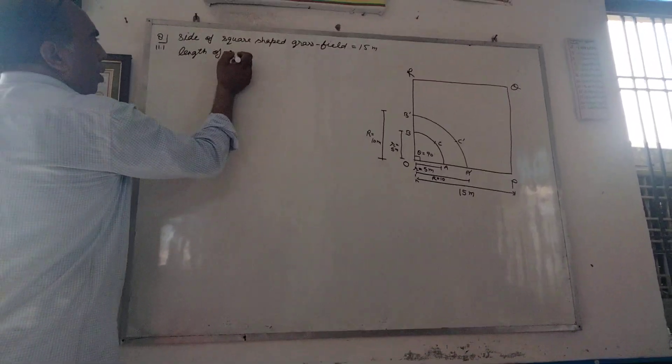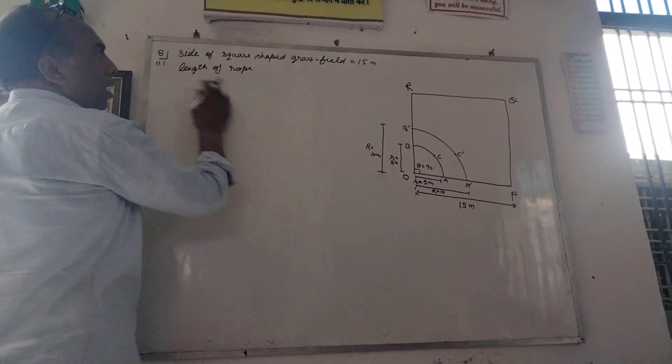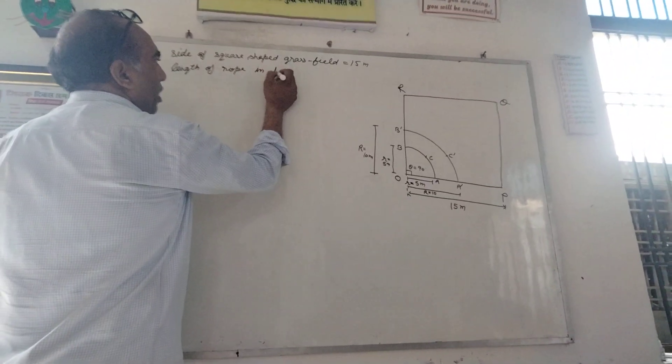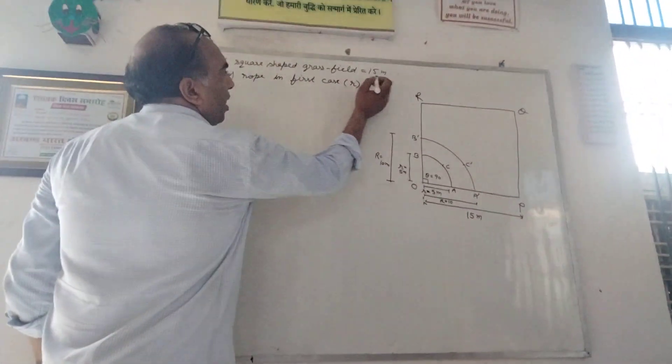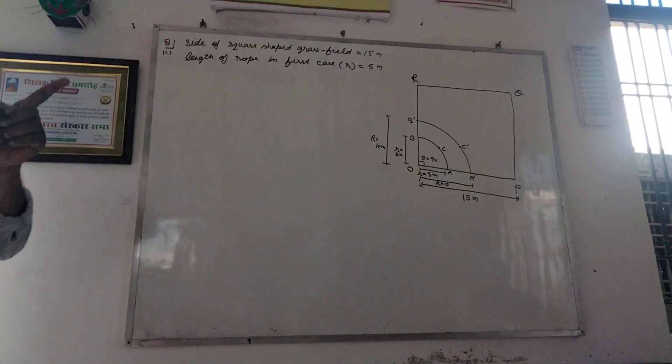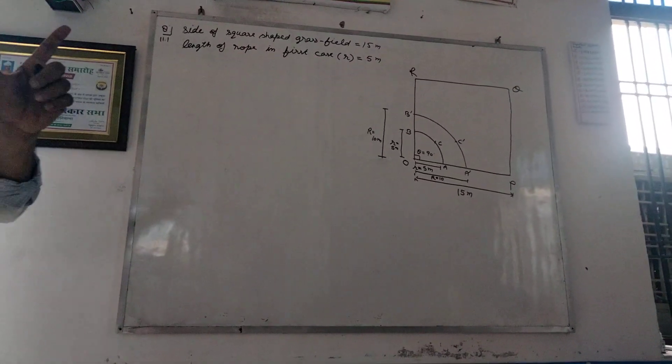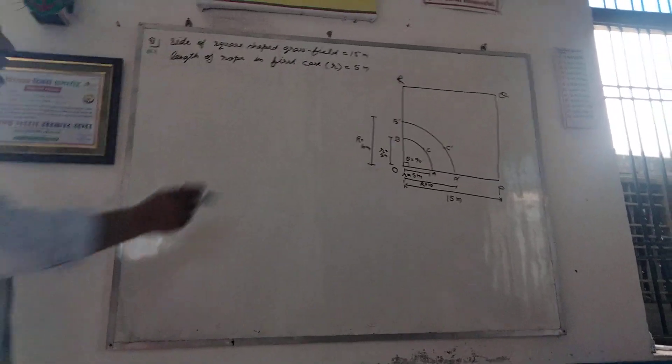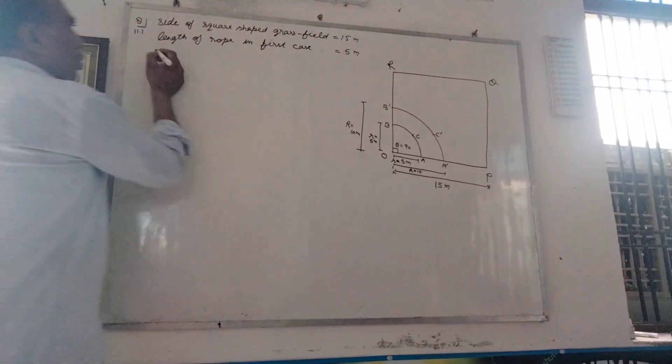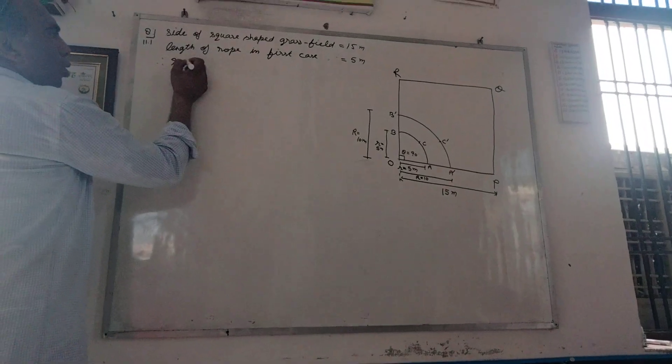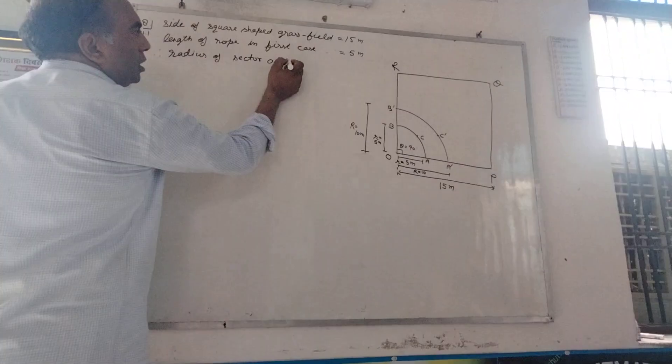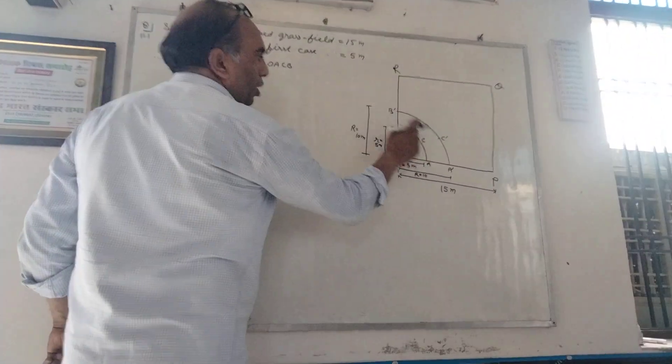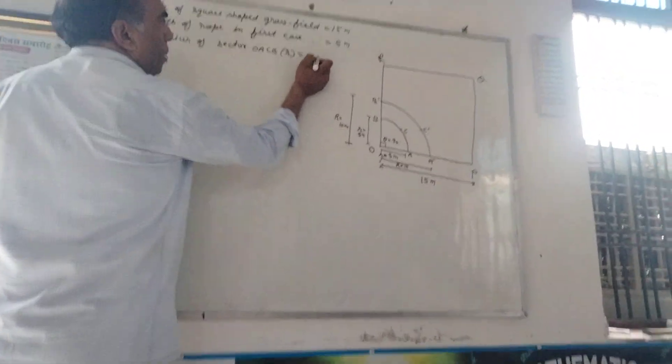Length of rope, length of rope in first case. 5 meters. Length of rope in first case. The radius of sector O, A, C, D. Now we have to put it in 5 meters.